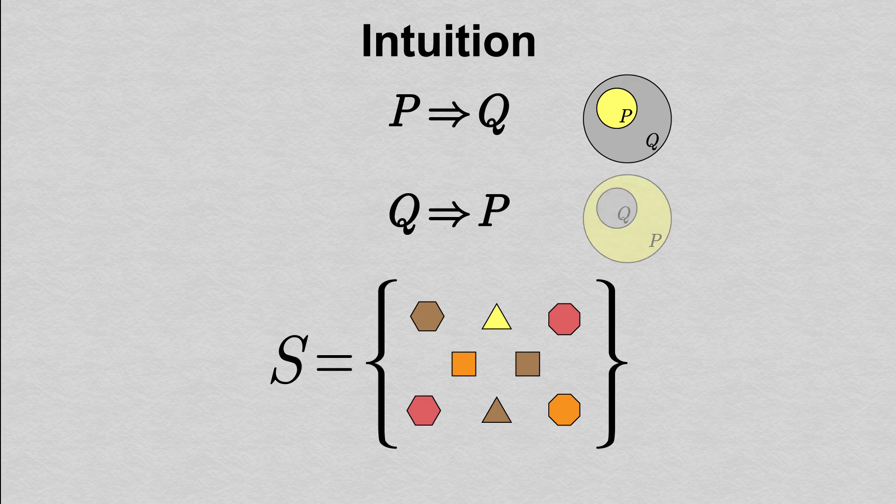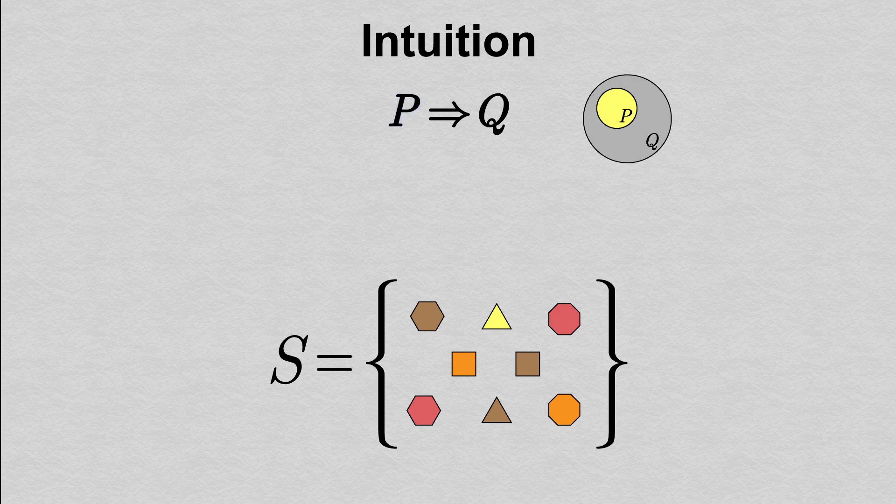Also, we can see that the Venn diagram for Q implies P looks quite different than the one for P implies Q. Second, an implication in general makes no assertion about what happens when the hypothesis is false. In the Venn diagram, P being false puts us outside the inner circle, but that's not enough to tell in general whether we're inside the circle for Q or not.